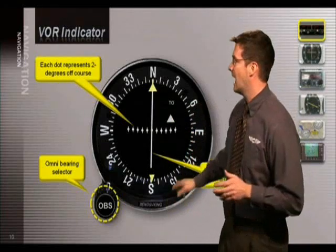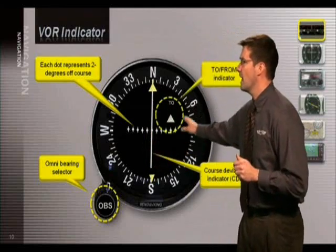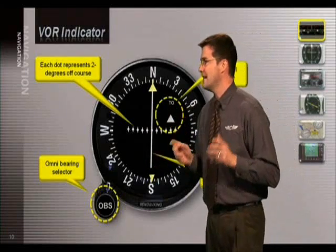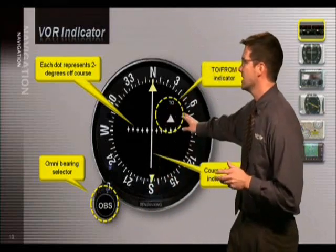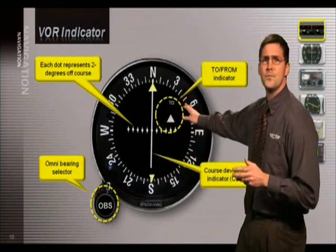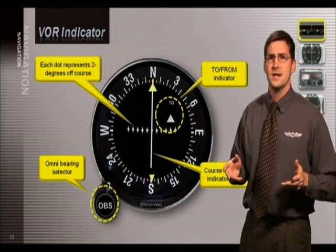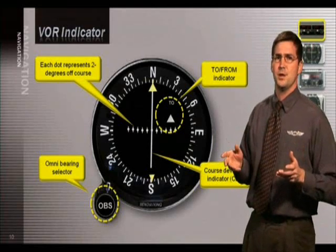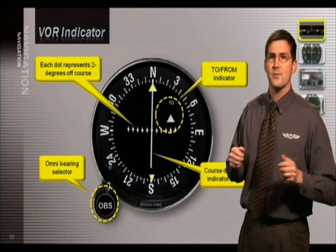Now this window is the to from indicator flag. If it displays to, then you are flying to the VOR station. If from is displayed and the course shown at the top is followed, the aircraft is flying away from the VOR station.